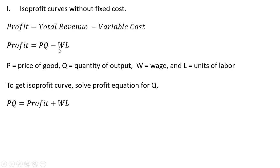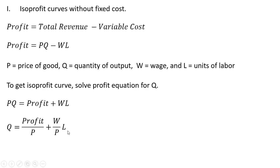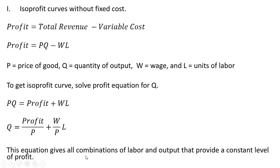So taking the profit equation, we're going to solve it for Q. Adding variable cost to the other side, and now dividing through by P, the price. That becomes our isoprofit curve equation, and this equation gives all combinations of labor and output that provide a constant level of profit.